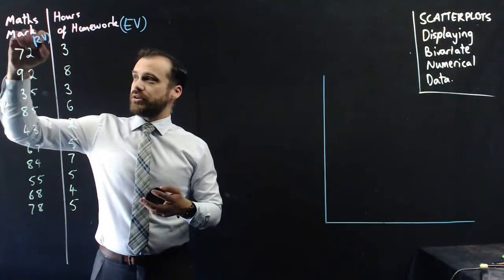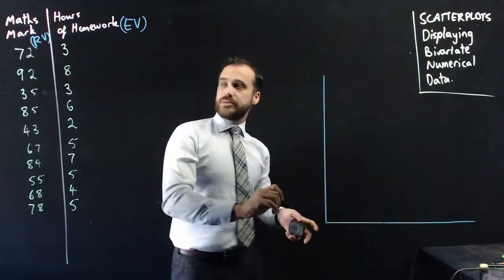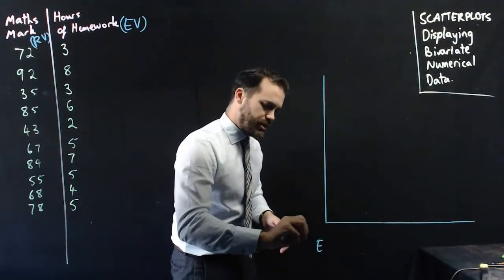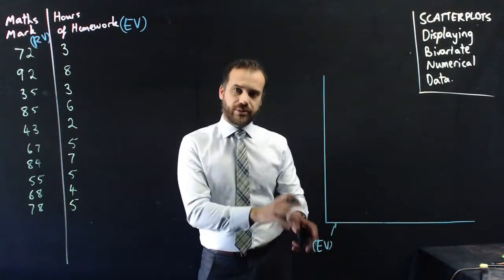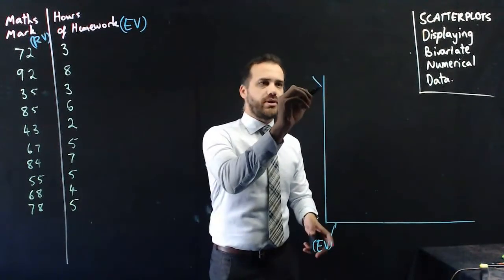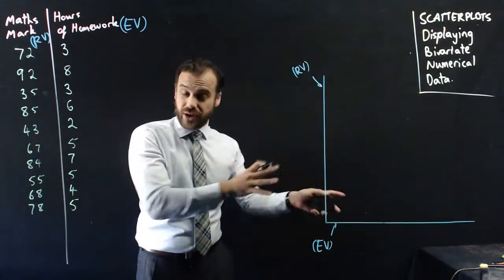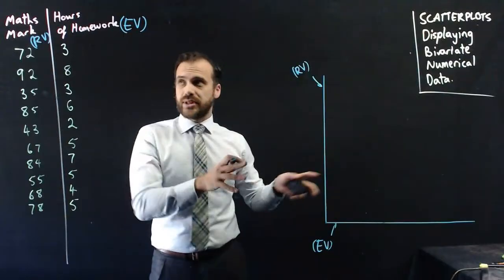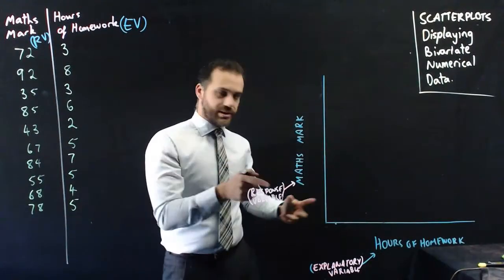And the maths mark is responding to. It's the response variable here. And when it comes to doing our scatter plot, we always put our explanatory variable on the x-axis, and we always put our response variable on the y-axis. Very important to make sure that we're doing that right. So now that I've got those labels here, now we need to consider our scale.